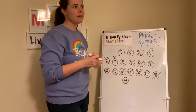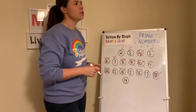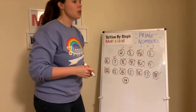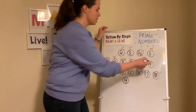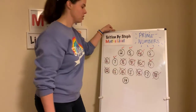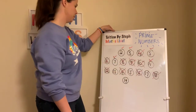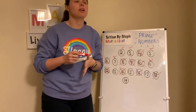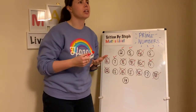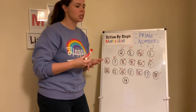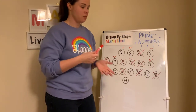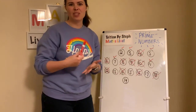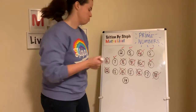Eleven: it's not in the twos, not in the threes, not in the fours — it's a prime number. Thirteen: is it in the threes? Three, six, nine, twelve — no. Fours: four, eight, twelve — no. Fives: definitely not. Six: six, twelve — no. Seven: seven, fourteen — prime number.